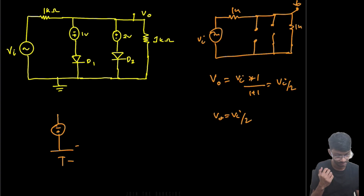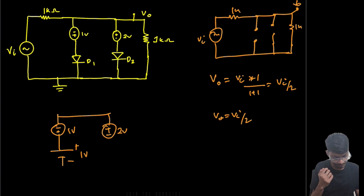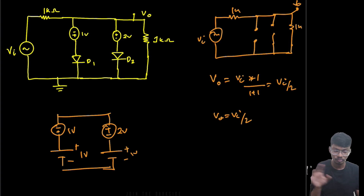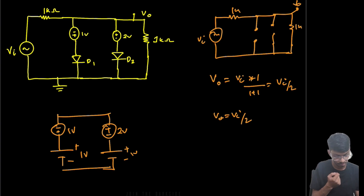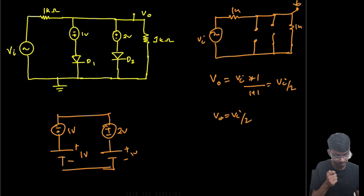Replacing the diodes with their equivalent cut-in voltages — 1 volt for D1 and ±2 volts for D2 — and applying KVL, we find it is not satisfied. This point comes to 0 volts when D1 is on, but the other point says we are at 3 volts, which is not possible. So our assumption that both diodes are on simultaneously is wrong.